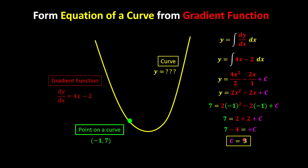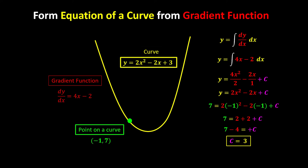Once we know c is equal to 3, we substitute it back into our equation of y. So we can say that our curve is y equals 2x squared minus 2x plus 3. This is how we reverse from the gradient function to get the equation of a curve.